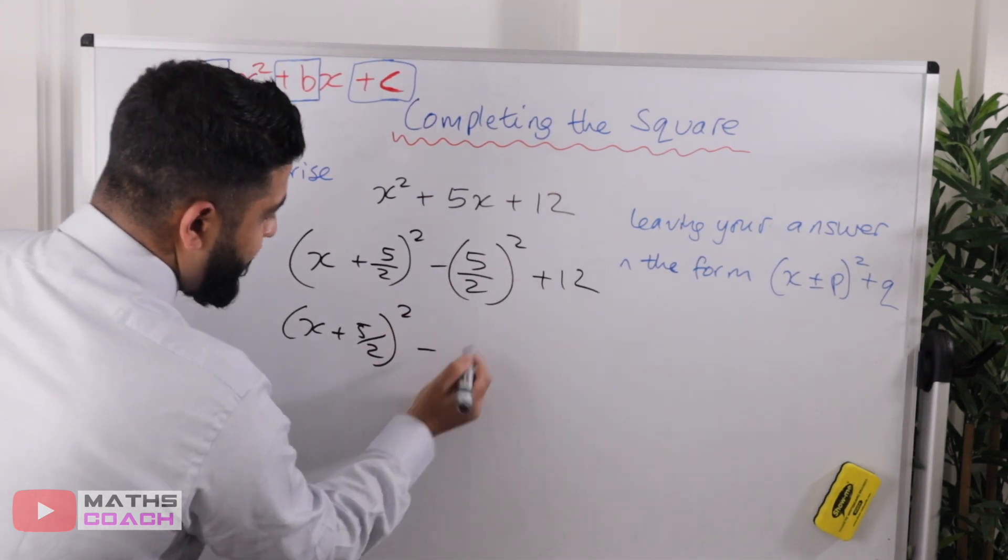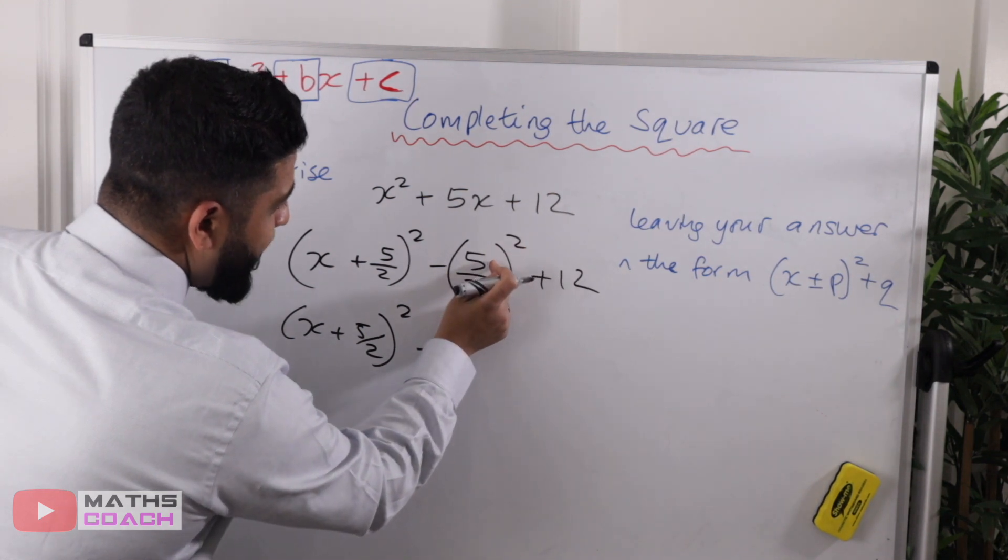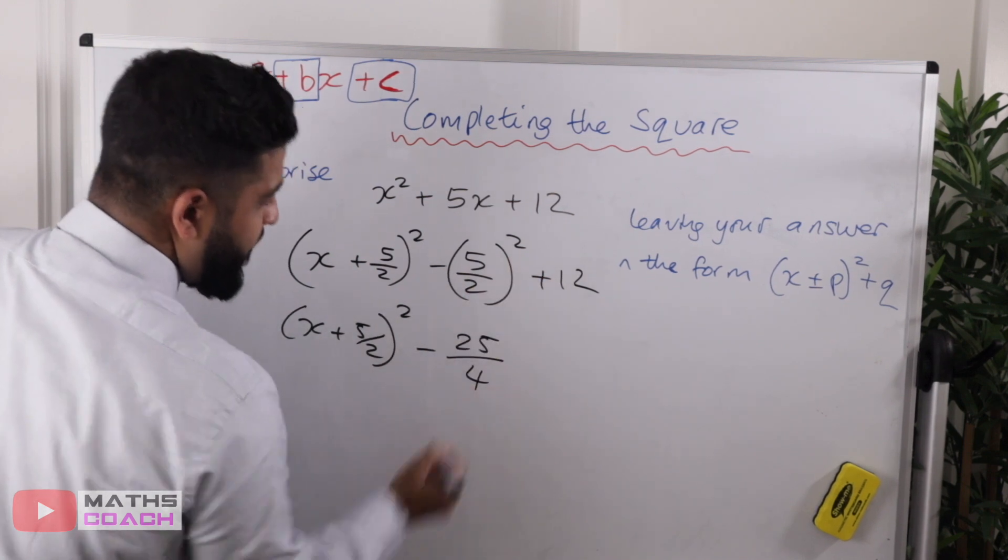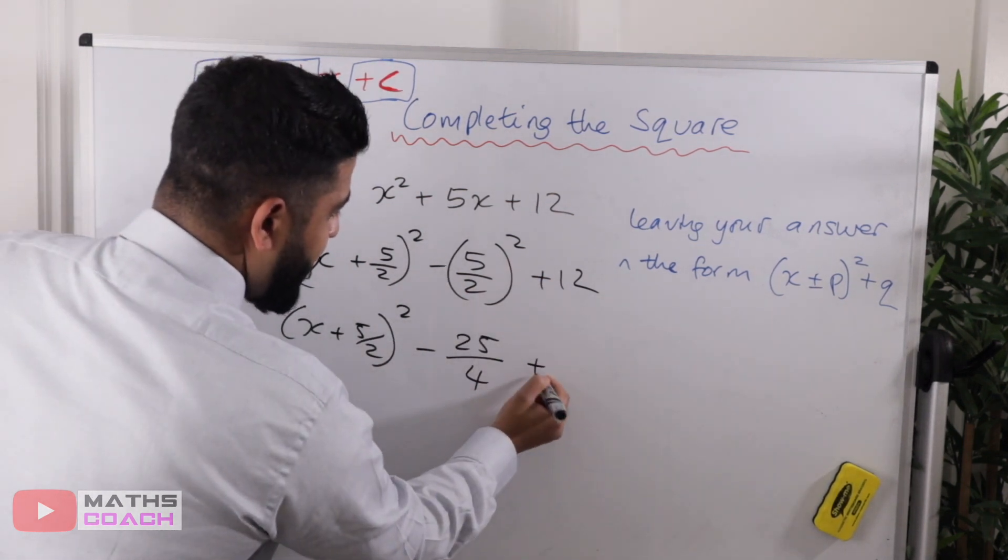So we have (x + 5/2)². And now what happens here, we've got minus, so we've got minus 5 squared here. So that's 25 over 2 squared, which is 4.